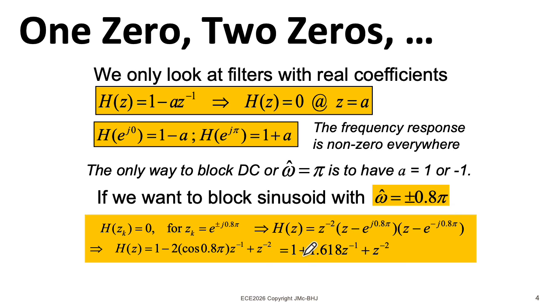So we wind up with a filter with coefficients 1, 1.618, 1. And the second-order filter will completely kill off a frequency of ω̂ equals 0.8π.